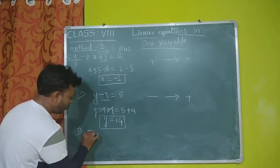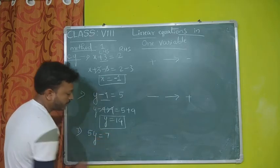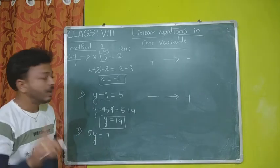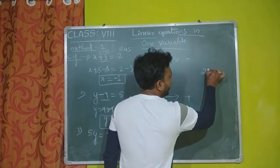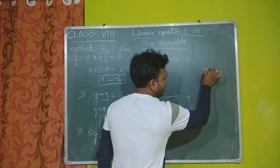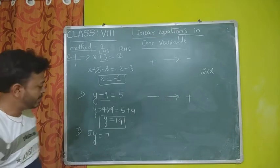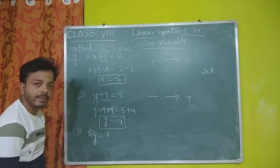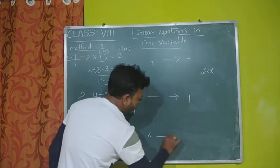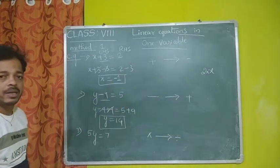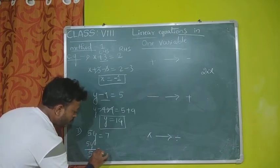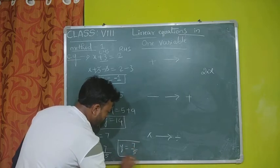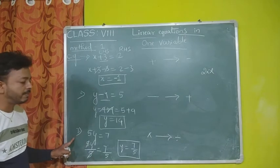Third example: 5y equal to 7. Here there is no sign between the constant and the variable, which means multiplication. Whenever a constant is given along with a variable without a sign, the relation between them is multiplication — that is always fixed. Since 5 and y are multiplied, and I don't want this 5, the opposite of multiplication is division. So divide both sides by 5: 5y divided by 5 equal to 7 divided by 5. The 5s cancel, giving y equal to 7 by 5. That is the solution of y.